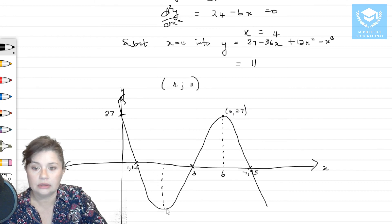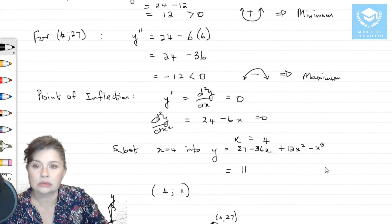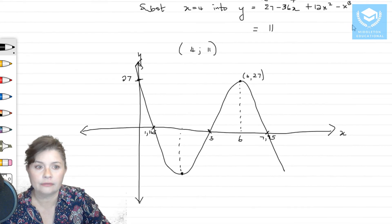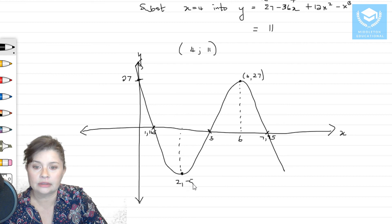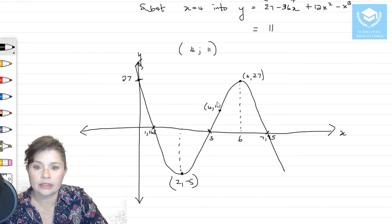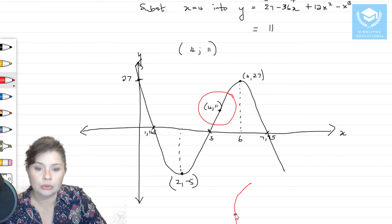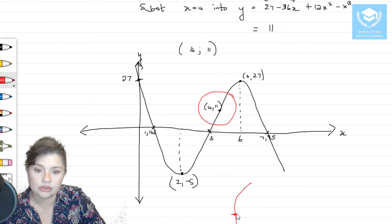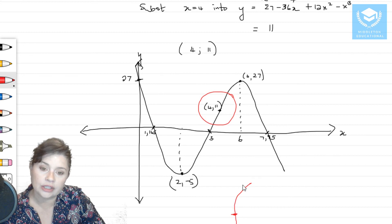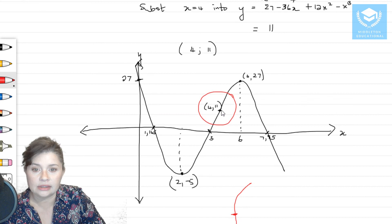The turning point at (6, 27) is the maximum, and (2, −5) is the minimum. The point of inflection is at (4, 11). If I exaggerate the curve to explain: the curve is going up and then all of a sudden changes direction. If you were to put a tangent line through it at that point, the curvature is leaning one way and then changes the other way — and the point at which it changes is the point of inflection.